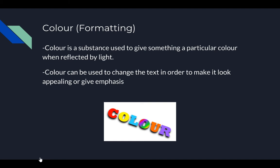Colour is a substance used to give something a particular colour when reflected by light. When colour is used in text, it's used to give emphasis or visual appeal — that's why magazines use it a lot, and it can also be used in book titles.